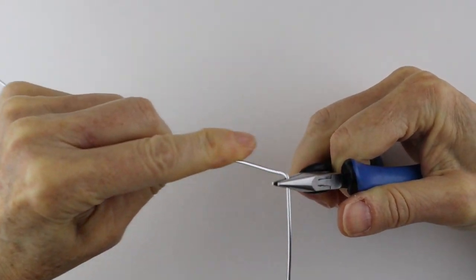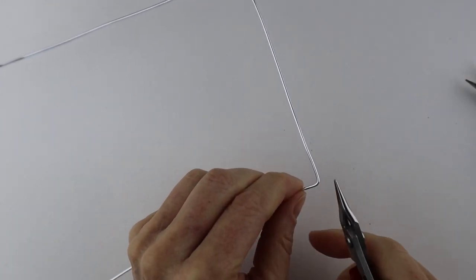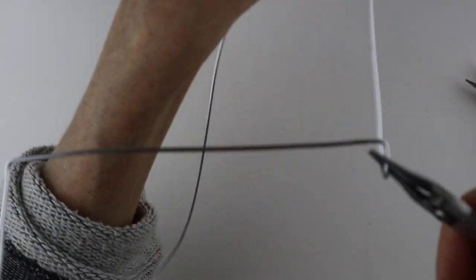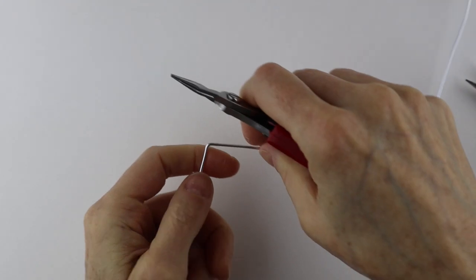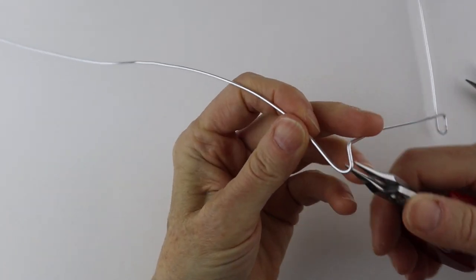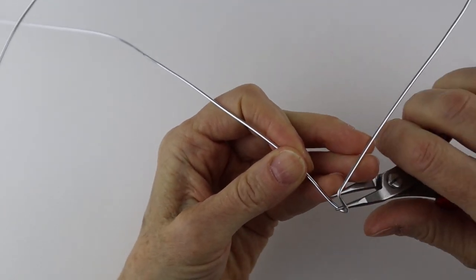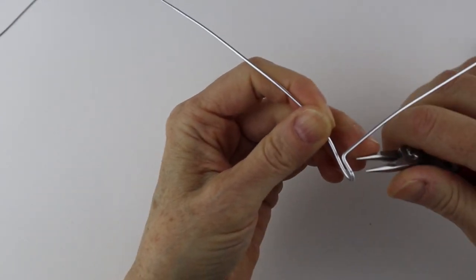And then we want to make a little lip for the photo to sit in, so we're just going to bend this. You can measure it with the ruler if you want or you can just eyeball it. It's about a quarter to three eighths of an inch. Now if you want to hold a picture frame in there just make this part a little bit thicker, but because I'm just putting the photo in there it can be pretty simple.